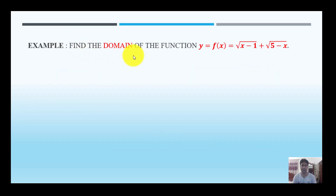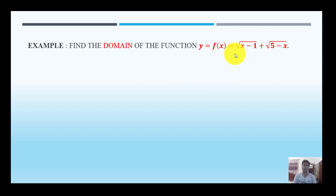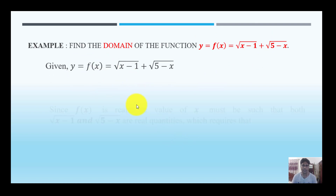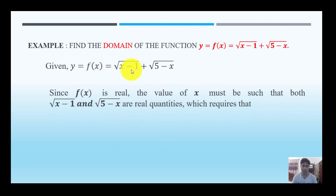Next example: find the domain of the function y = f(x) = √(x − 1) + √(5 − x). For a square root to be defined, the expression inside must be greater than or equal to zero, so x − 1 ≥ 0 and 5 − x ≥ 0.